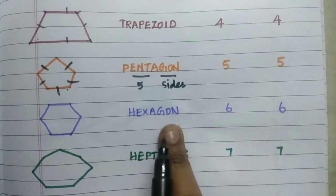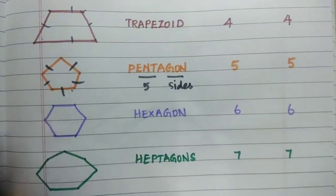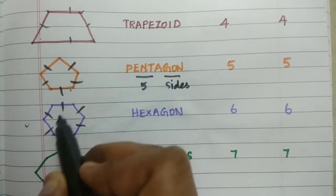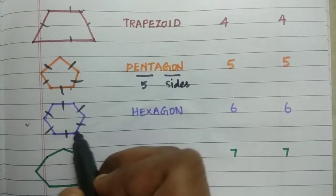Hexagon means six sides. So it has six sides and six vertices present.